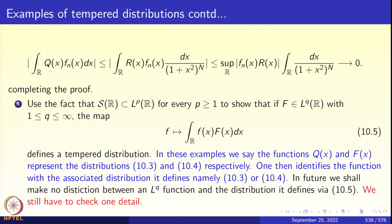The Schwartz space S(R) sits inside Lp(R) for every p ≥ 1. Suppose I take a capital F in Lq, where q is the dual exponent to p, satisfying 1/p + 1/q = 1. Then multiply F by a little f from S(R) — since f is in Lp and F is in Lq, by Hölder's inequality the product is integrable. Define f ↦ ∫ f(x)F(x) dx (display 10.5). That gives a tempered distribution — so every Lq function gives a tempered distribution.